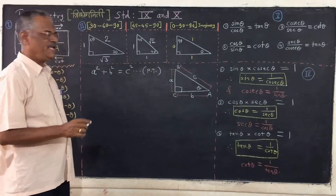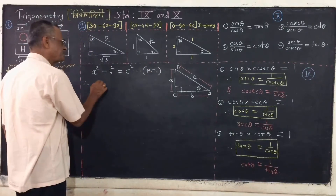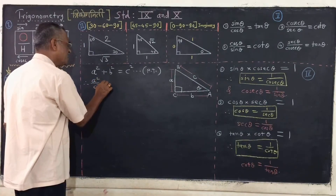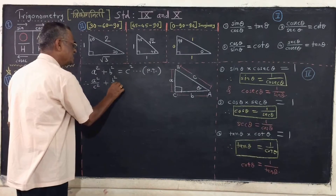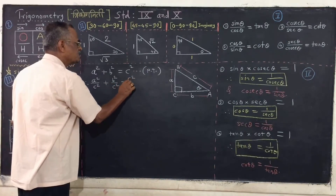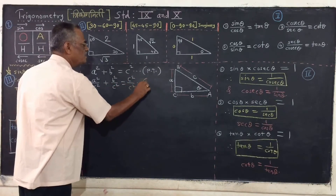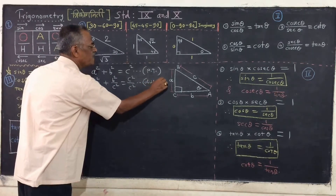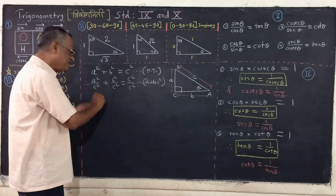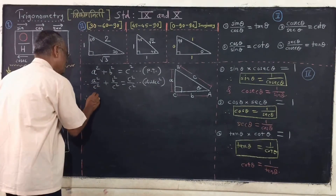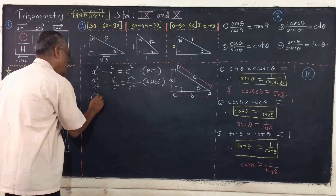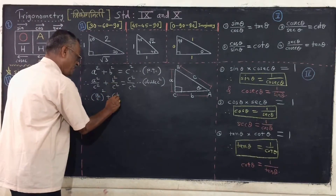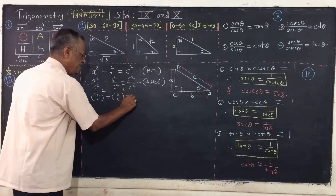If we divide by c squared: a squared upon c squared, plus b squared upon c squared, is equal to c squared upon c squared. Dividing by c squared, we get: (a/c) squared plus (b/c) squared is equal to 1.